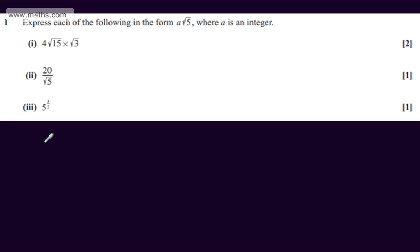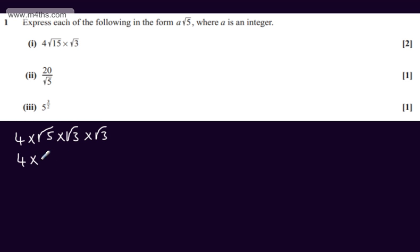There are a few different approaches that you could take here. I'm going to write the root of 15 as the root of 5 multiplied by the root of 3. So we're going to have 4 multiplied by root 5 multiplied by root 3 multiplied by root 3. Root 3 times root 3 is 3, so I can write 4 times root 5 times 3, which is 12 multiplied by root 5. So our final answer is 12 root 5.